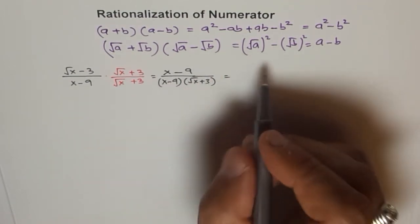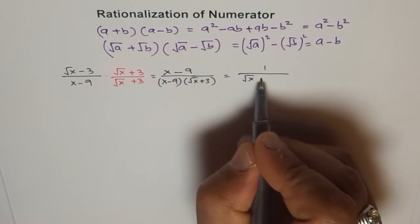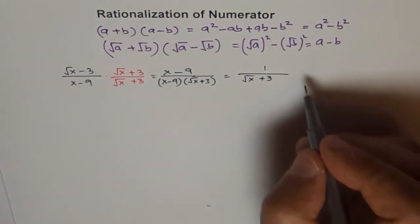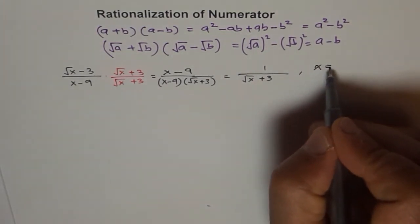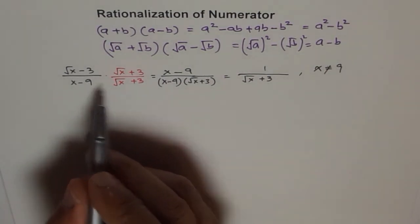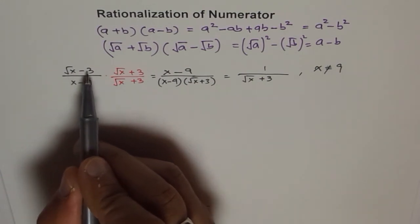Now x minus 9 can cancel out and simplifies to square root of x plus 3. Always remember, when you do these kinds of questions, you should write your restrictions that x is not equal to 9. Because that is not permitted. If you write x equals 9, you get 9 square root is 3, and 3 minus 6 is 0, and 9 minus 9 is 0. So you get 0 over 0.